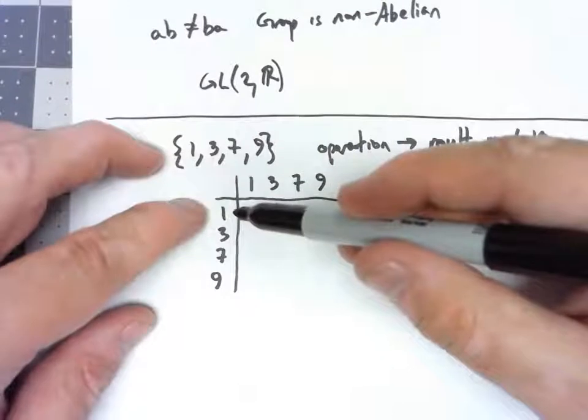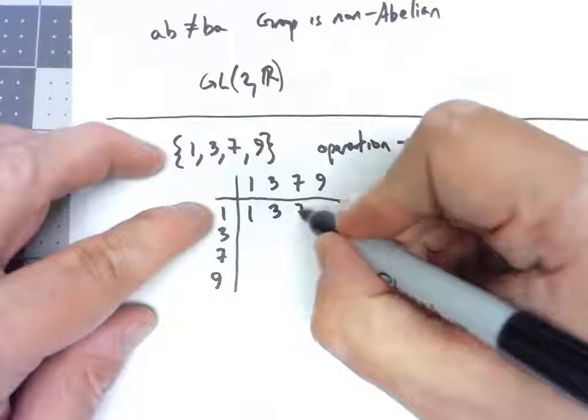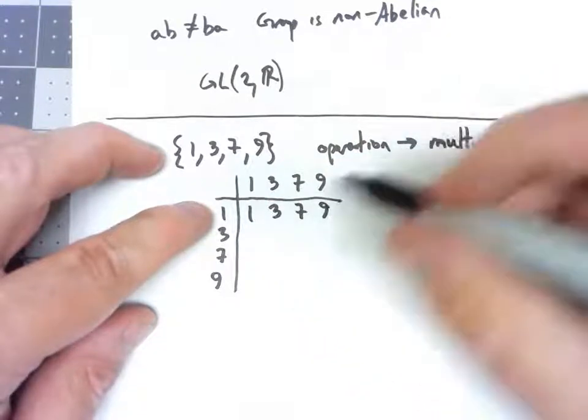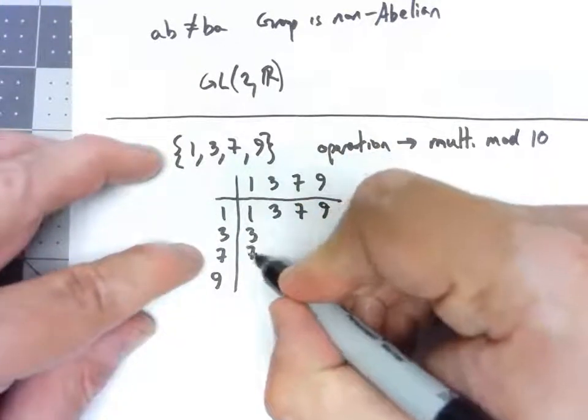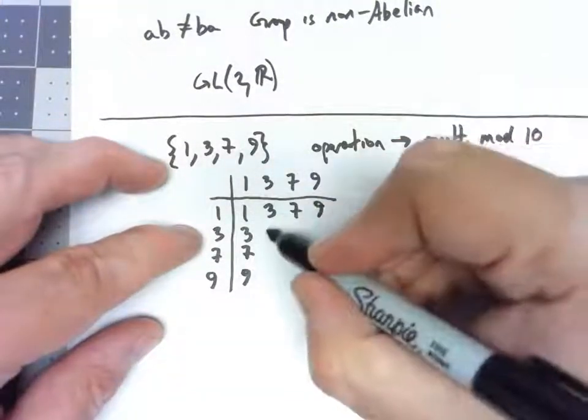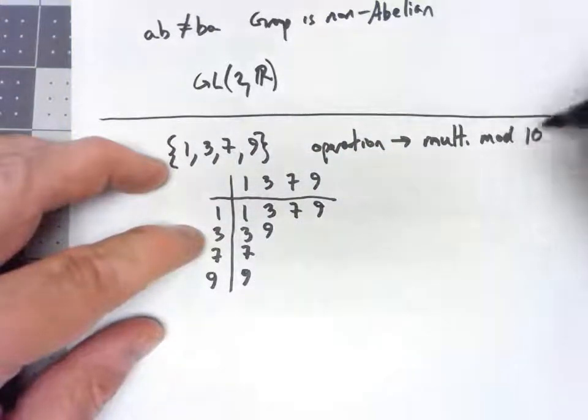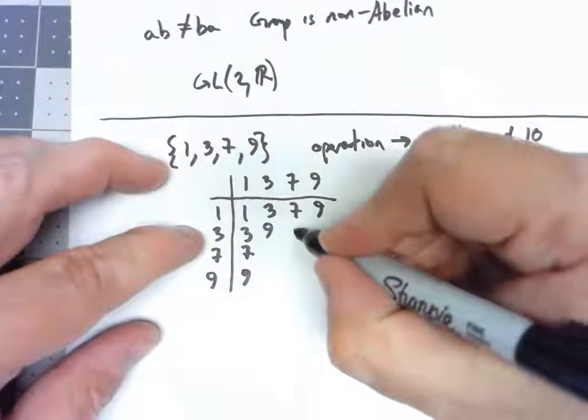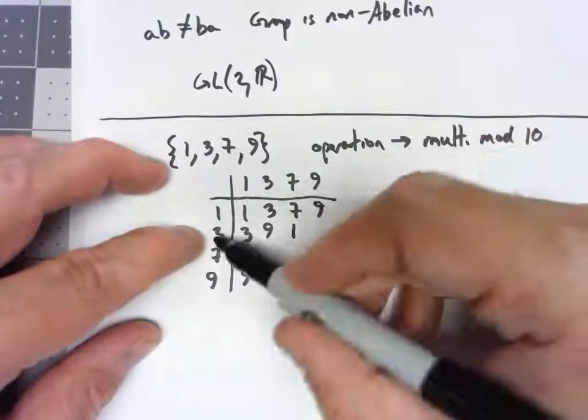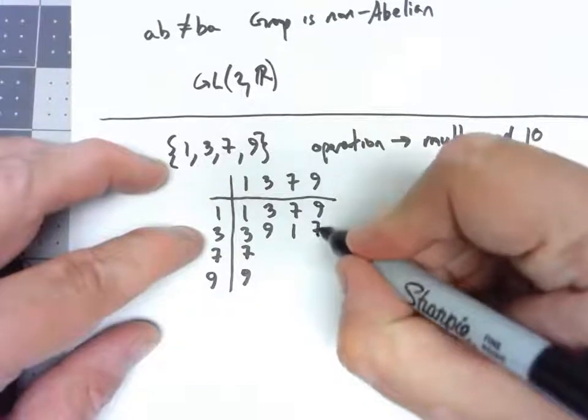Now multiplication by 1 is very easy. 1 times 1 is 1, 1 times 3 is 3, 1 times 7 is 7, 1 times 9 is 9, and the same thing down here. 3 times 3 is 9. 3 times 7 is 21. When I take it mod 10, that effectively just cuts it down to the last digit. 3 times 7 is 21, chops it down to a 1. 3 times 9 is 27, chopped to the last digit, makes that a 7.